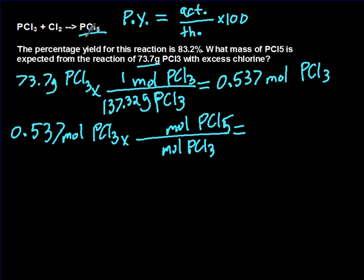The coefficients are all 1 here. So it's 1 to 1 to 1. It's already balanced. So it's a 1 to 1 ratio here, so it's just 0.537 moles of PCl5.